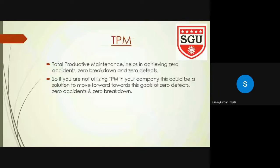What does the term TPM mean? TPM means Total Productive Maintenance, which helps in achieving zero accidents, zero breakdown, and zero defects in an organization. If you are not utilizing TPM in your company, this could be a solution to move forward towards these goals of zero defects, zero accidents, and zero breakdowns.